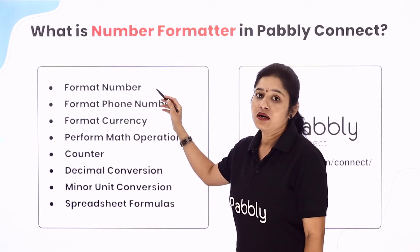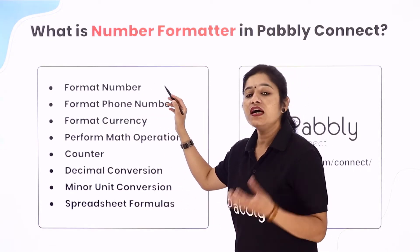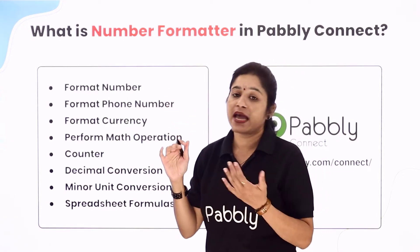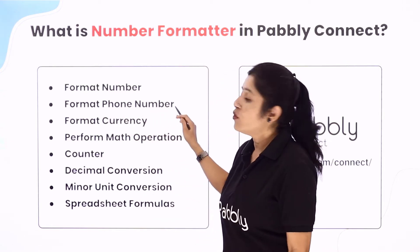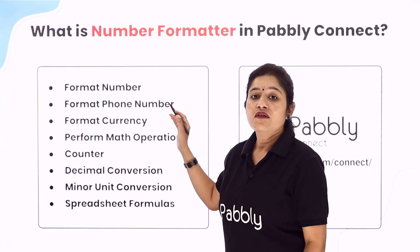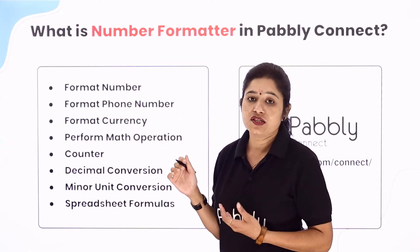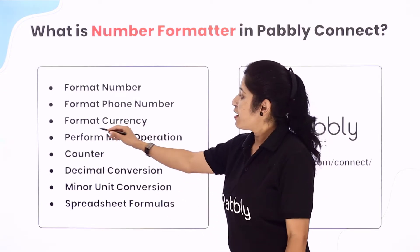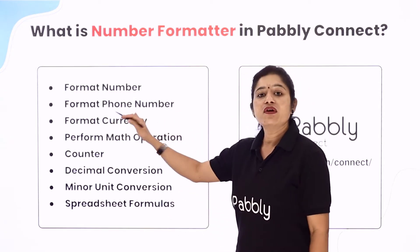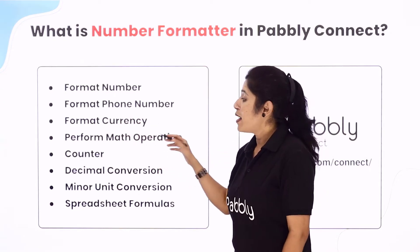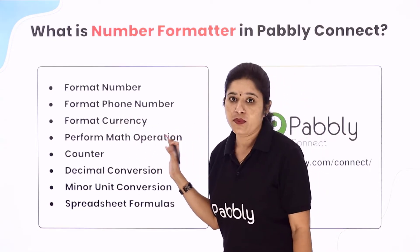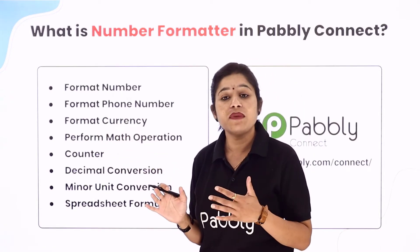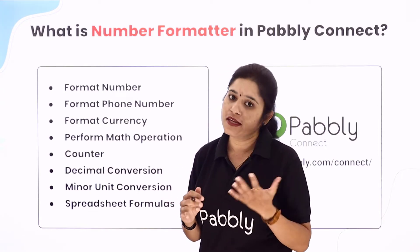The first feature is format a number — a number can be grouped in thousands separated by commas and spaces. The second feature is format a phone number, which can be formatted into national or international styles. Then we have format currency option. We also have perform mathematical operations, where we can add, subtract, multiply, divide, or make numbers negative.